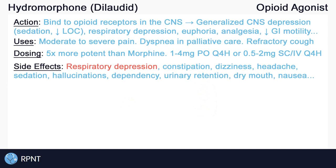Hydromorphone can cause respiratory depression, which can be life-threatening — it is one of the major side effects that we look out for. Be aware that constipation is an important side effect of hydromorphone due to its effect of decreased GI motility. CNS depression may manifest as dizziness, headache, sedation or decreased level of consciousness, confusion, hallucinations, and more.